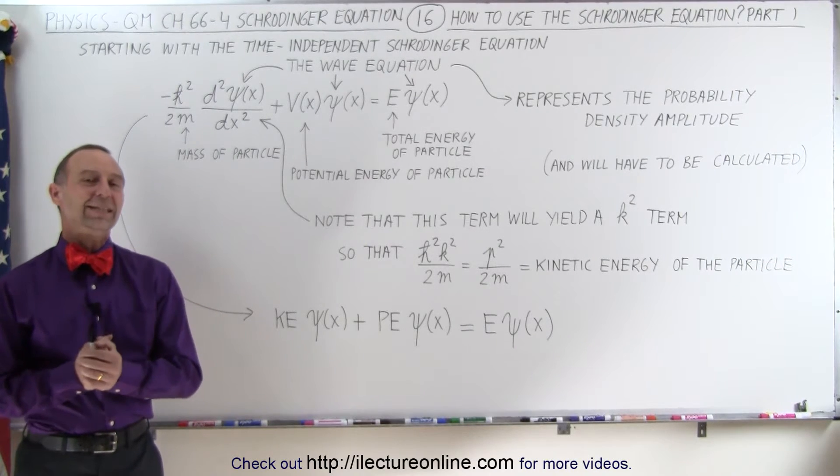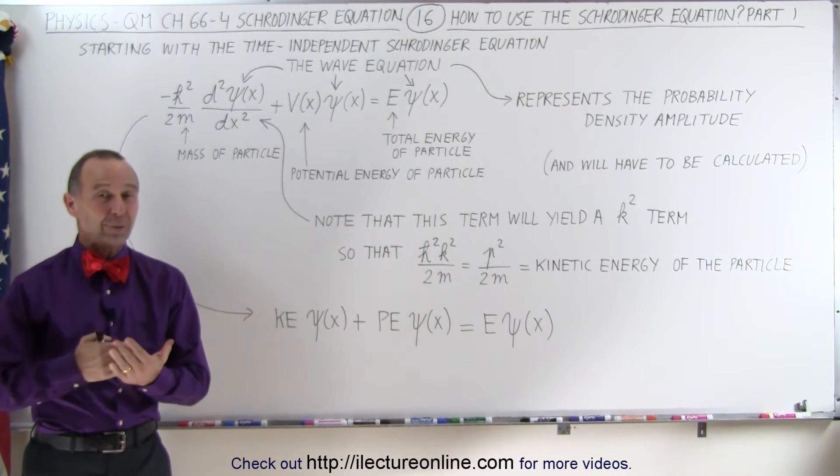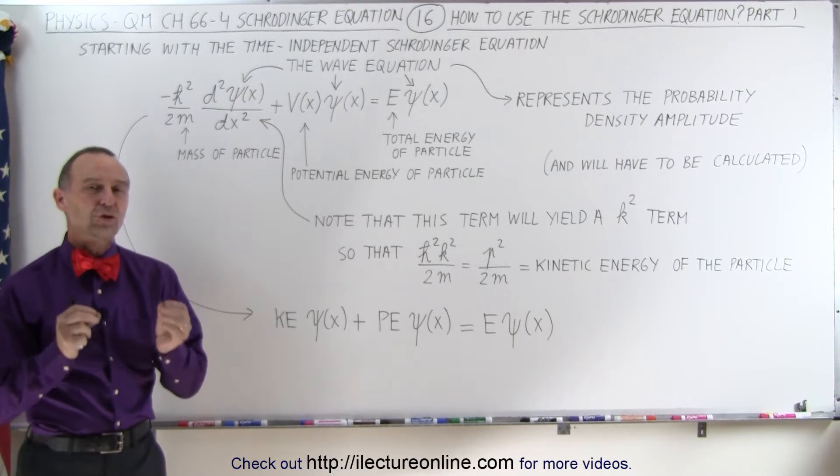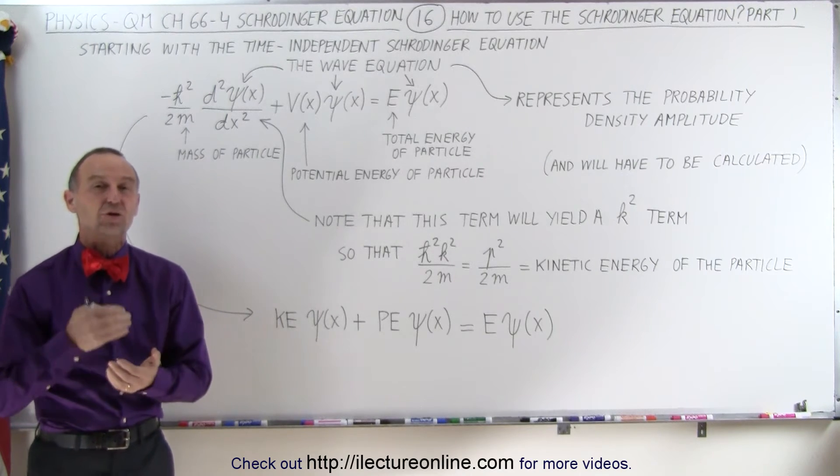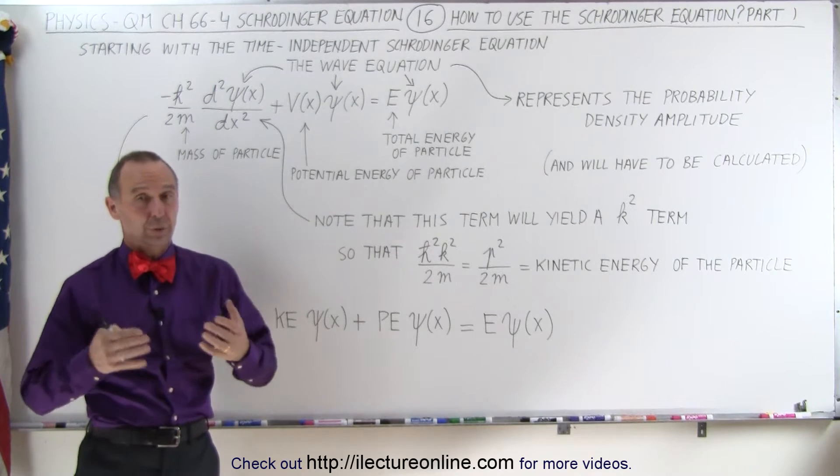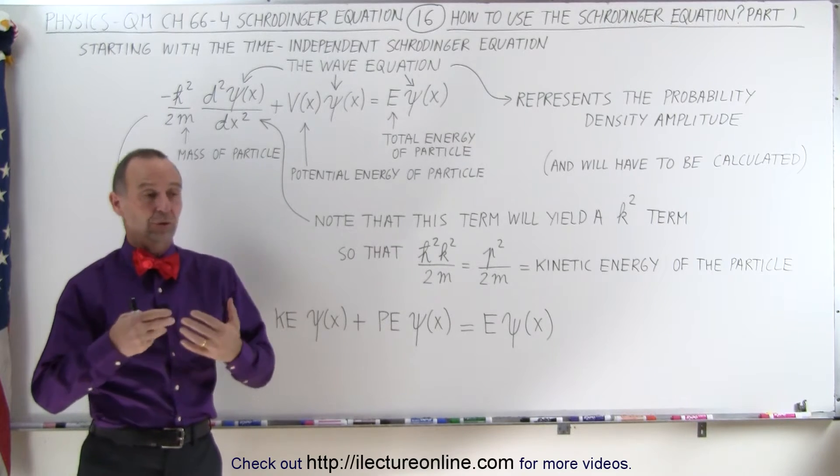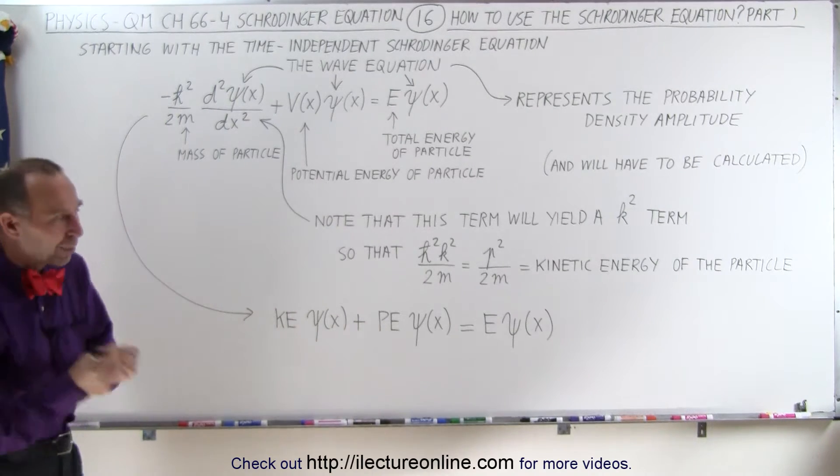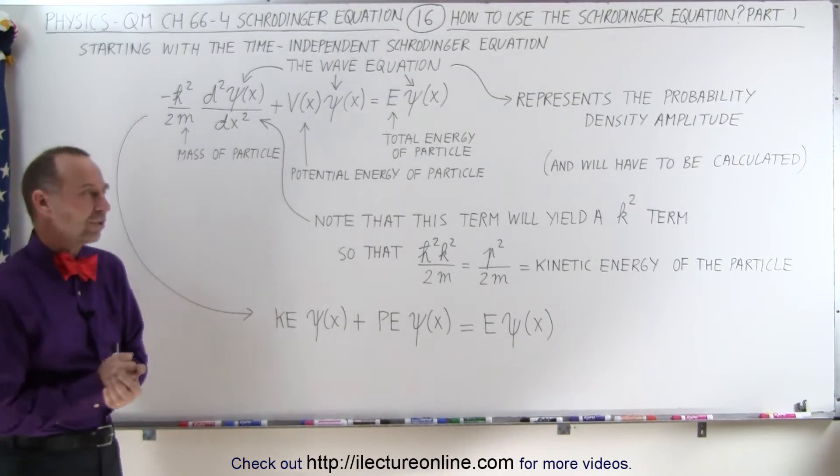Welcome to ElectronLine. In this video and the ones to come afterwards, we're going to show you how we utilize the Schrodinger equation to solve for the path or the existence or the probability of finding a particle in a particular location.